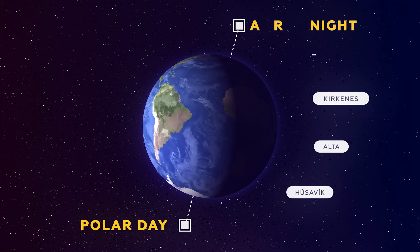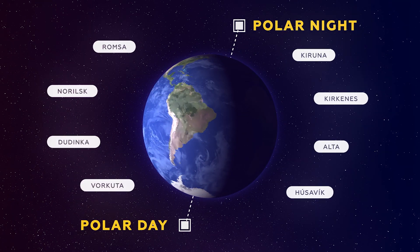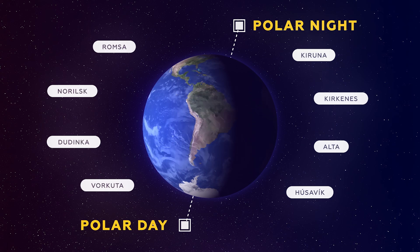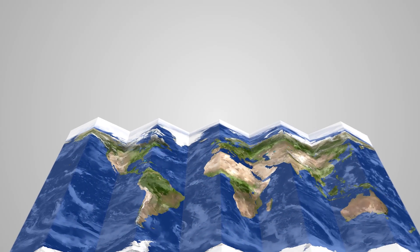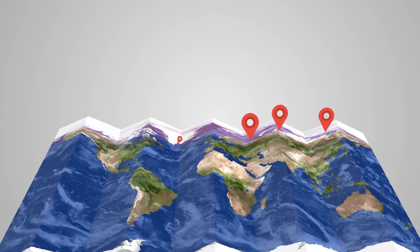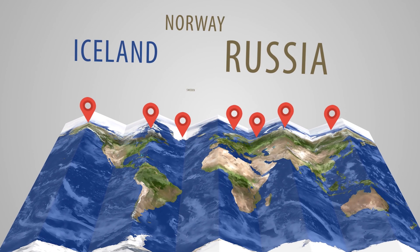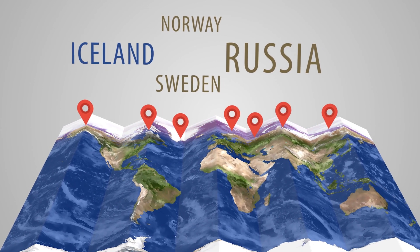There are some places on Earth where the sun doesn't set. It's true. In the summer months, certain countries close to the Earth's poles experience periods of sunlight that can last 24 hours and more.